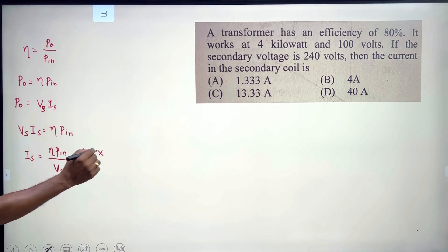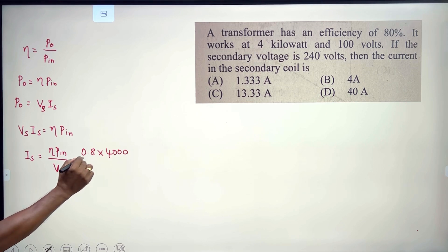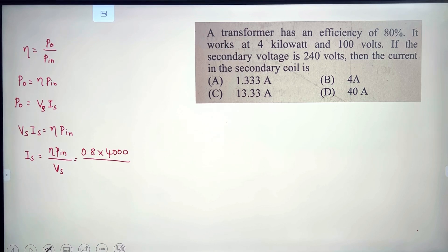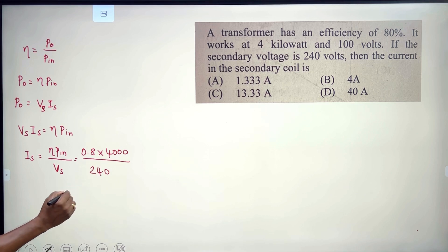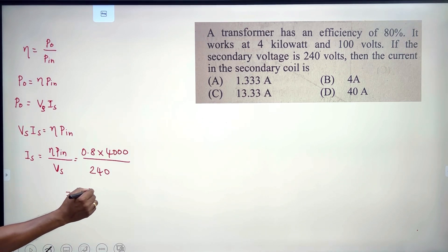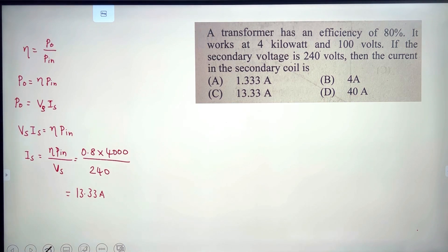The input power is 4000 watts and the secondary voltage is 240 volts. Solving for the secondary current: I = (0.8 × 4000) / 240 = 13.33 amperes. The correct option is C.